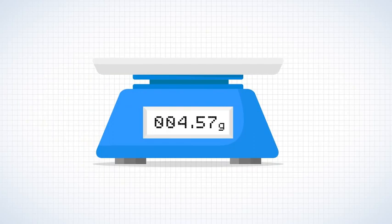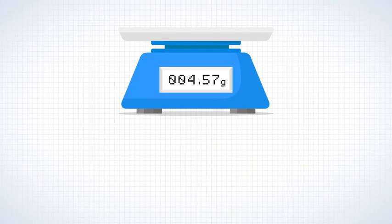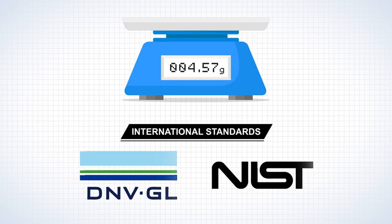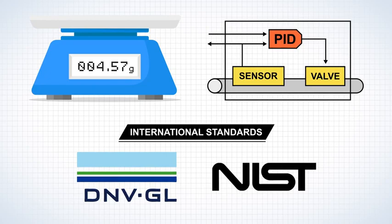All the Brooks Instrument Coriolis mass flow devices are calibrated using precision weight scales, traceable to international standards, providing the best possible accuracy and zero stability. They are then tested and tuned as a complete system to ensure fast and stable control with robust performance.